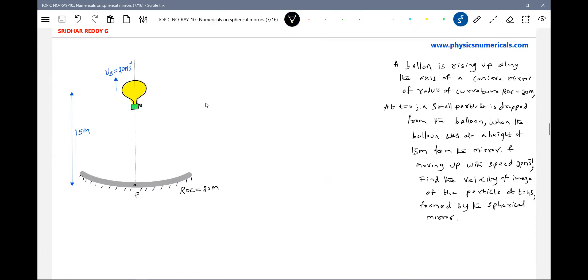Okay, we have a balloon here. A balloon is rising up along the axis of a concave mirror of radius of curvature 20 meters. At t equals zero, a small particle is dropped from the balloon when the balloon was at height of 15 meters from the mirror and moving up with speed 20 meters per second. Find the velocity of image of particle at t equals four seconds formed by the spherical mirror.